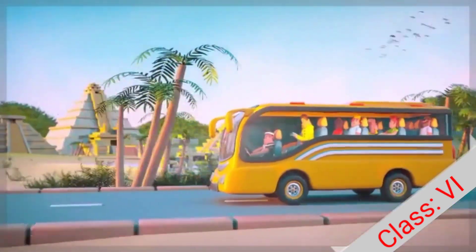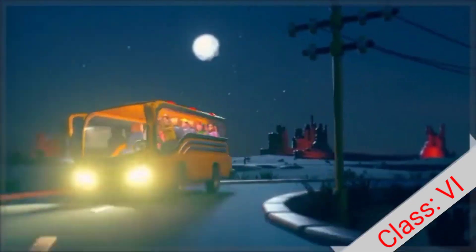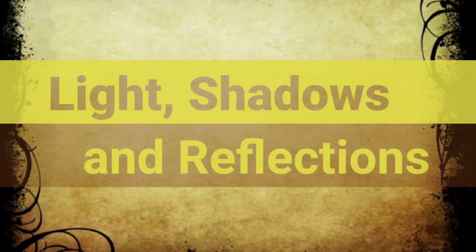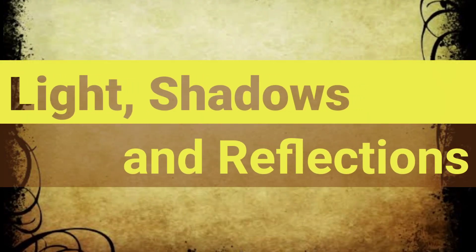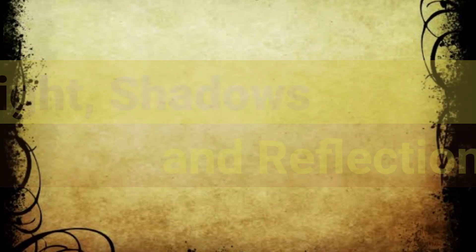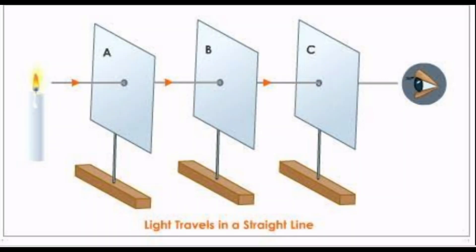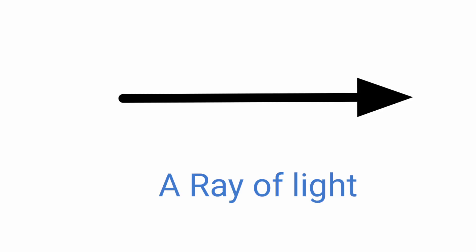Welcome back dear students. Today we will continue our chapter number 12, Light Shadows and Reflections. Today we are going to learn about rays and beams of light. As you know children, light travels in a straight line and this property is known as rectilinear propagation of light.